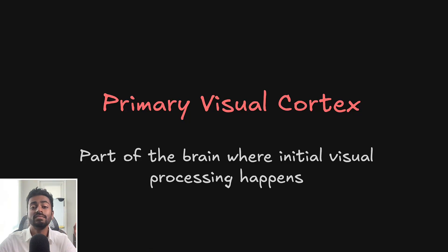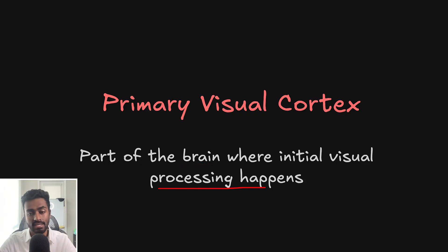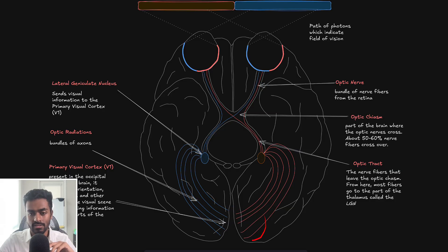Greetings fellow learners. In this video we are going to talk about the primary visual cortex. The primary visual cortex is the part of the brain where initial visual processing happens. If we take a cross section of the brain, the primary visual cortex falls towards the back of the brain.